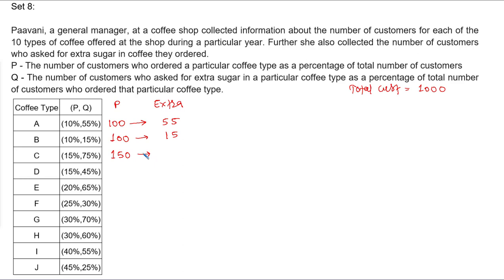75 percent of 150: 50 percent is 75 and 25 percent is 37.5 — keep it as it is. Coffee type D: 15 percent of 1000 is 150, and 45 percent of that — 40 percent is 60, plus 5 percent of 150 is 7.5 — giving 67.5. We are getting decimal numbers because we assumed total customers as 1000, so we can say the actual number of customers is some other number; treat these as relative values.